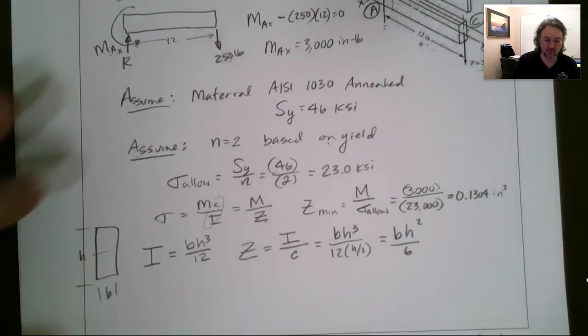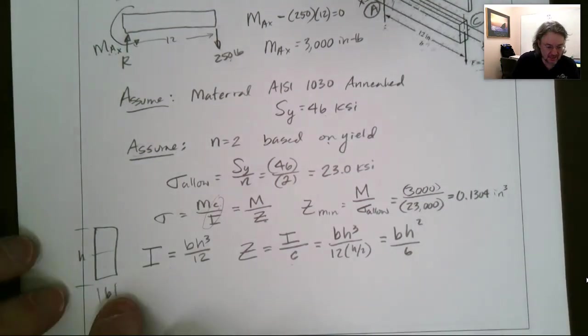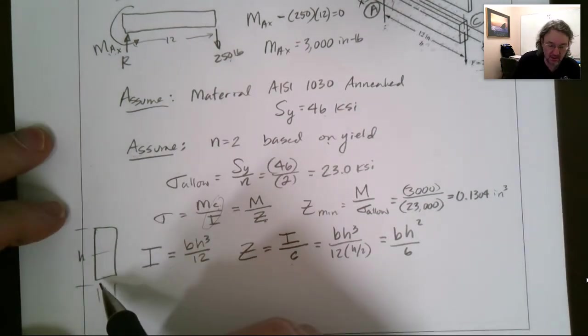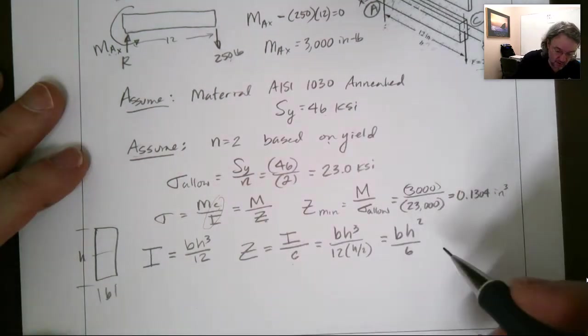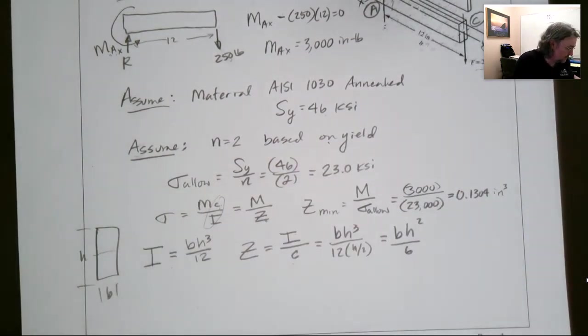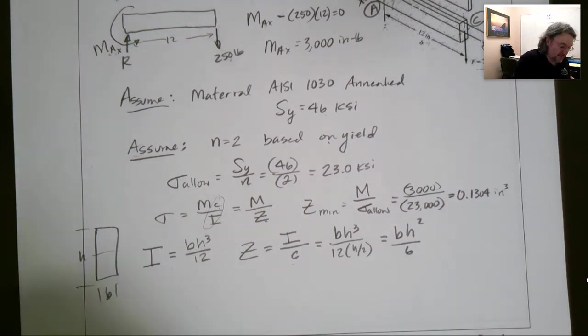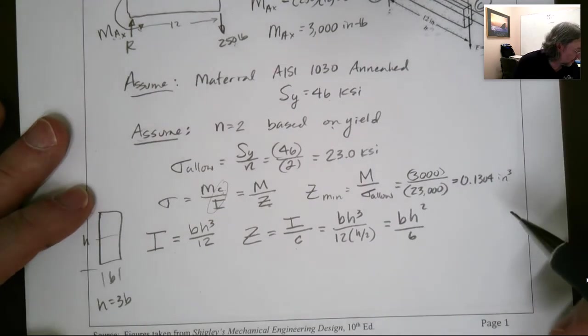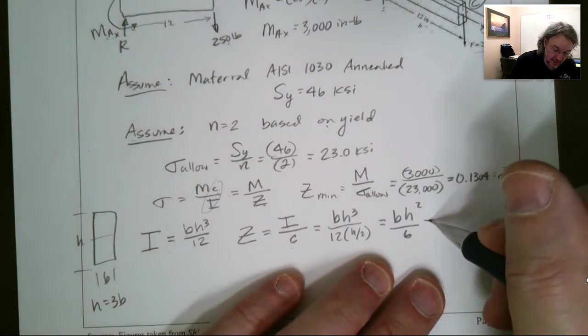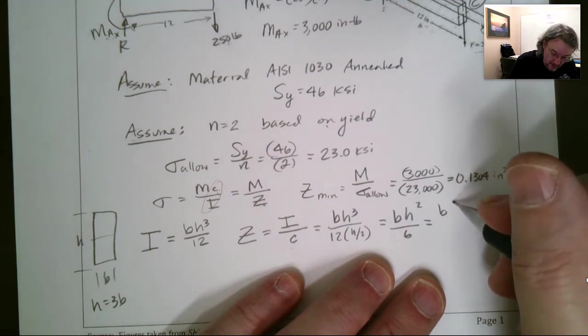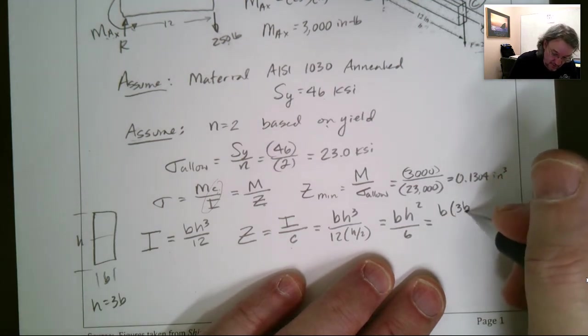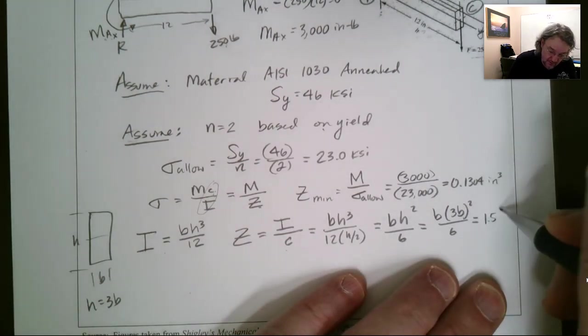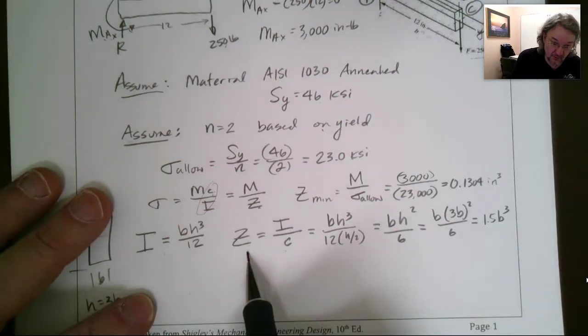And so, if I do that and I stick those back in there and I go B and then I go 3B squared over 6, I end up with 1.5B cubed for my Z. So, now my Z can be equal to, or the other way, I can make, if I set that equal right here, I can find B, right? I can divide this by 1.5 and take the cube root.